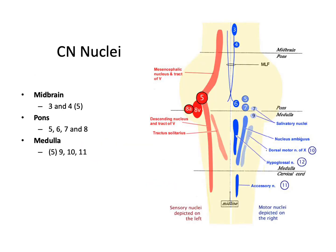Just touching briefly on the cranial nerve nuclei — these can be seen in this diagram here, which I really like because it breaks things down quite easily and also includes structures like the medial longitudinal fasciculus. From the midbrain you have cranial nerve nuclei three, four, and also five, since it stretches the whole length of the brainstem. From the pons there's five, six, seven, and eight, and from the medulla: five again, nine, ten, and eleven.